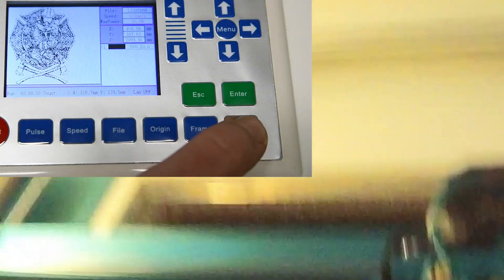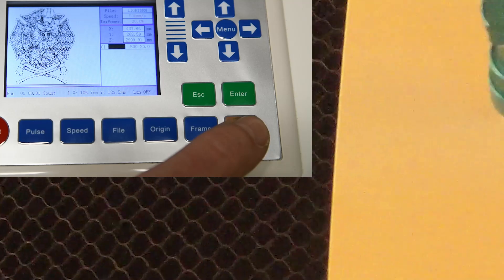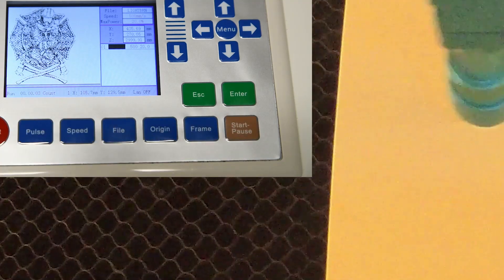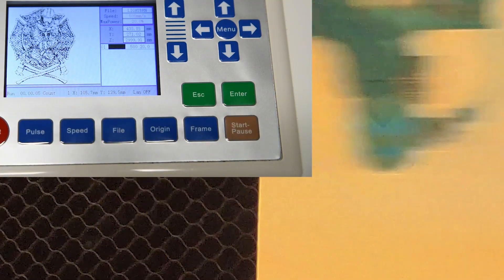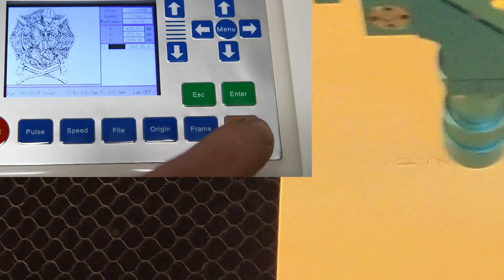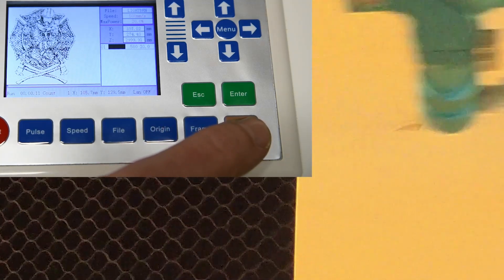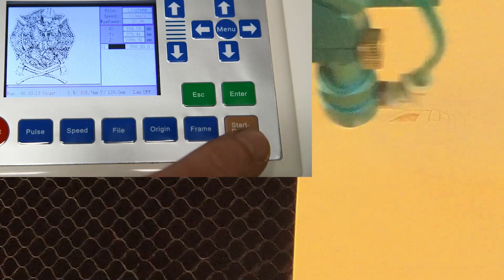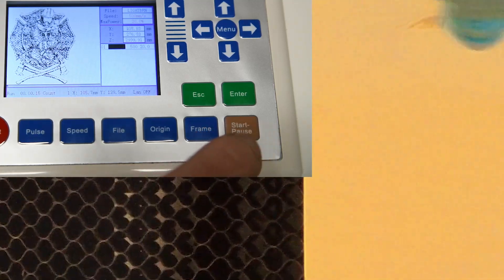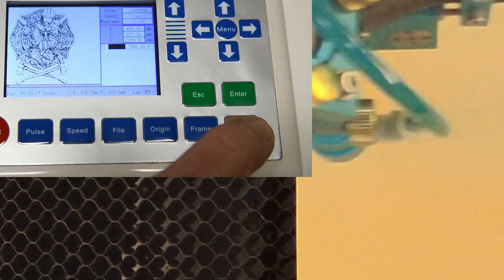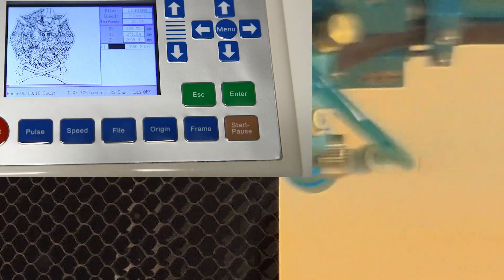Start and let it etch the first bit. Just let it do maybe an inch or so, or just until you've got enough info to see if it's going right or not. Then like that, you just press pause and it'll stop the machine.